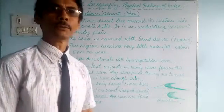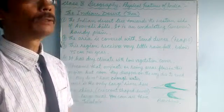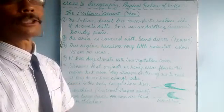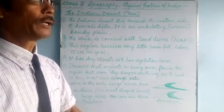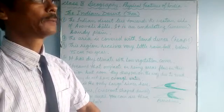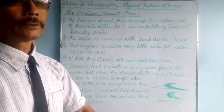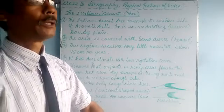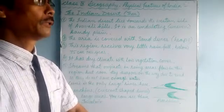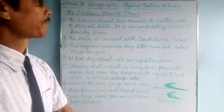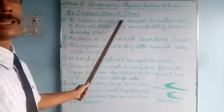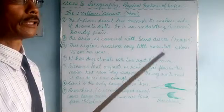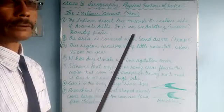Good morning, students of class 9. Welcome back to the online classes. Now let's do our job — every lesson on physical features of India. So far we have learned about the Himalayas, the northern plains, and plateau regions. Now we'll go to the desert region — the Indian desert. We'll talk about the Indian desert, which lies in Rajasthan and part of Gujarat.